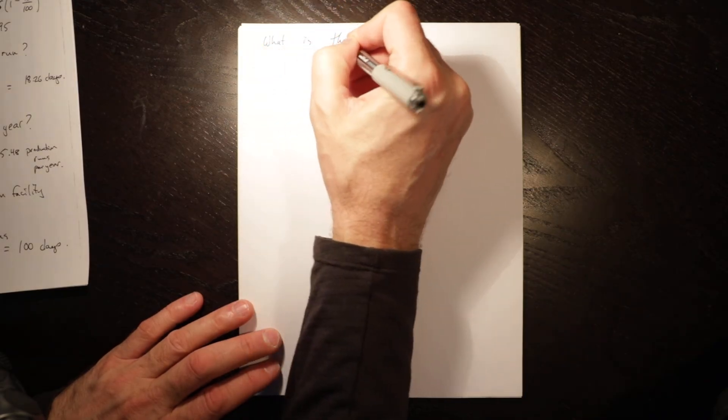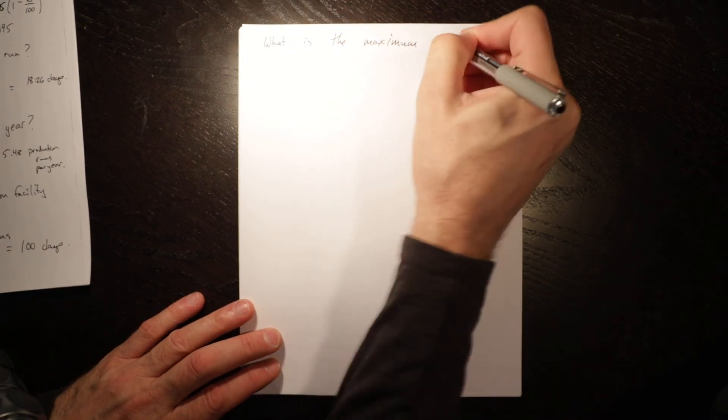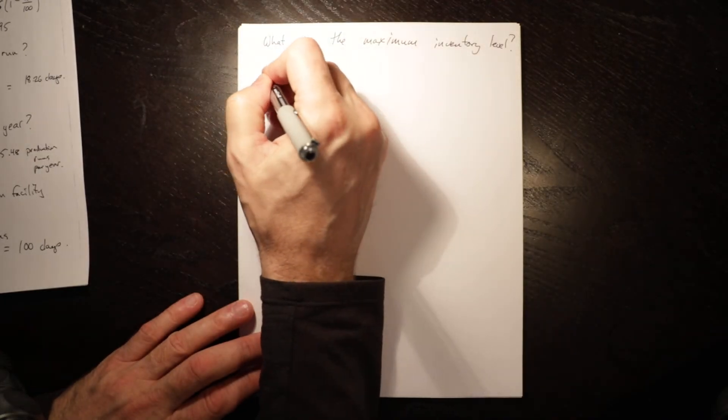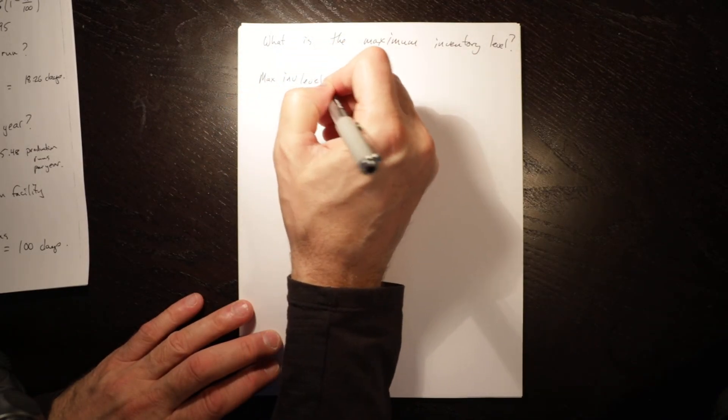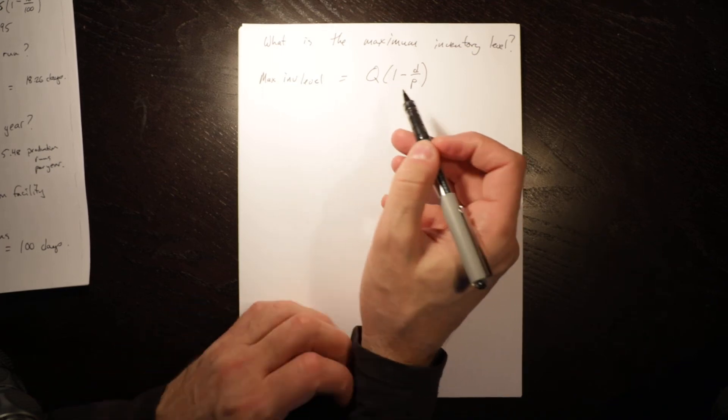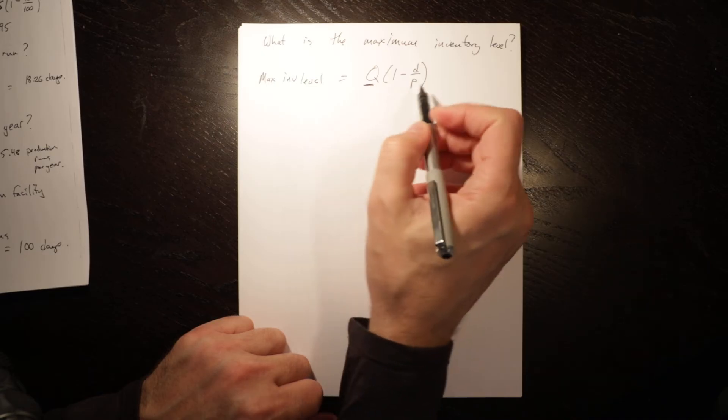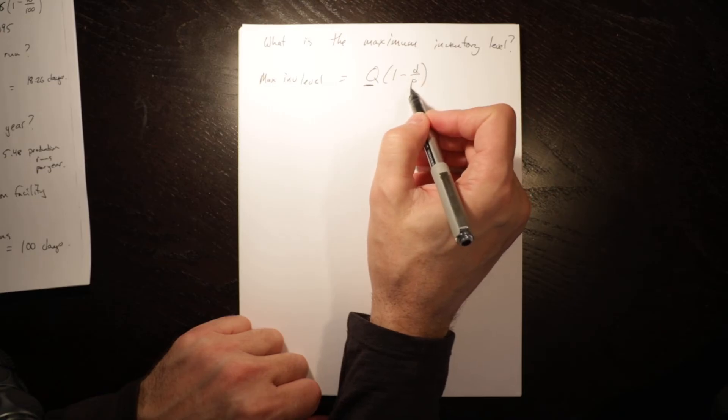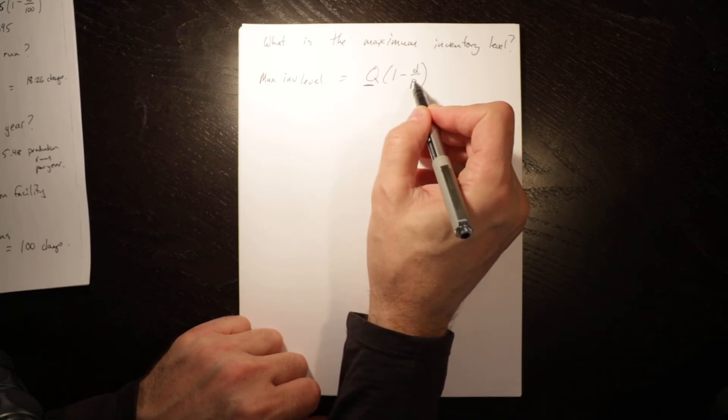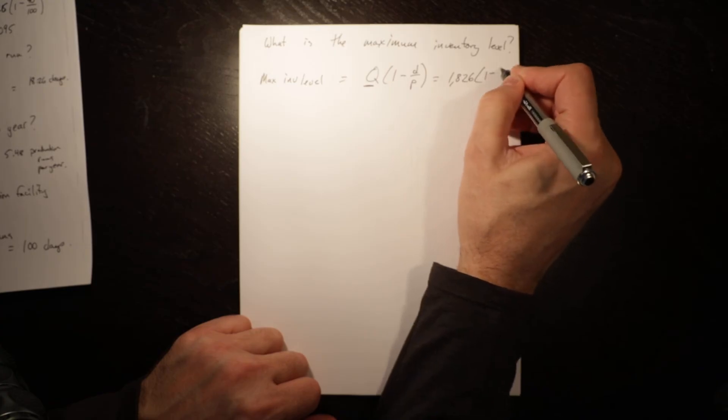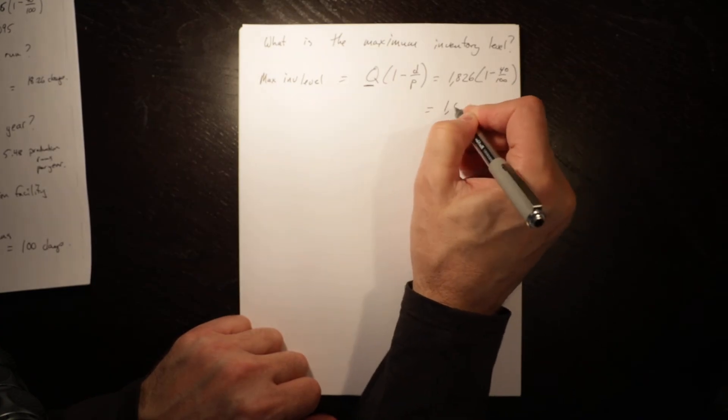So that raises the question then: what is the maximum inventory level? And that is Q times 1 minus D over P, which means this is how much we produce and this ratio is how much we use of what we produce over the time of the production run. So we reduce that by that ratio, and that is equal to 1826 times 1 minus 40 over 100, equals 1095.